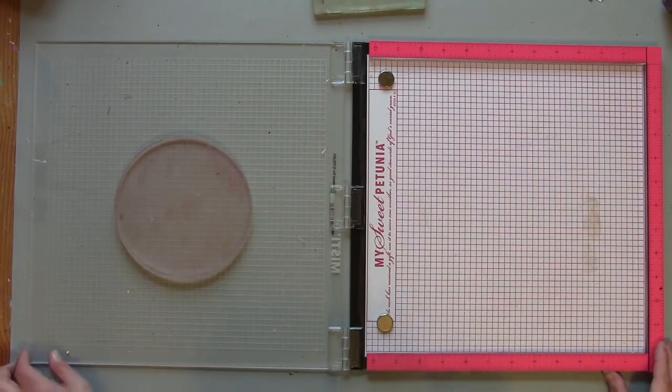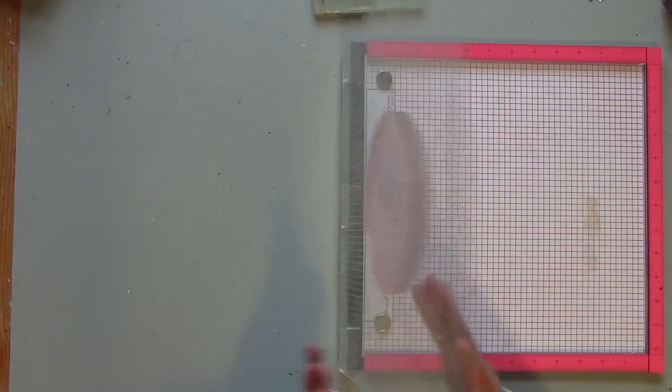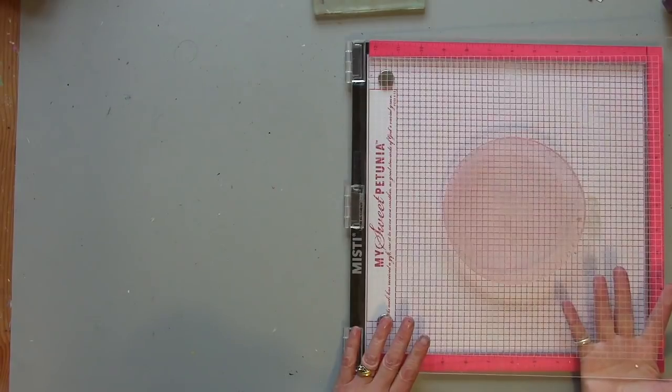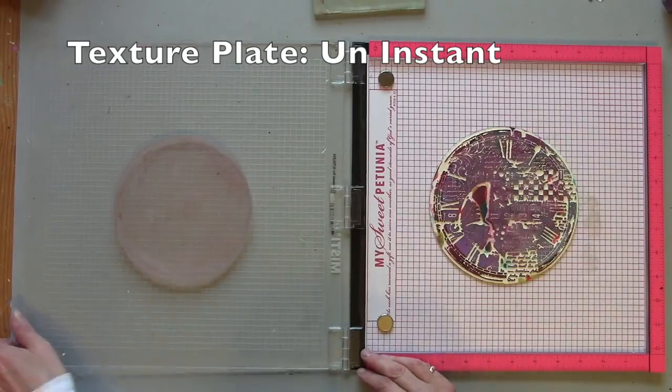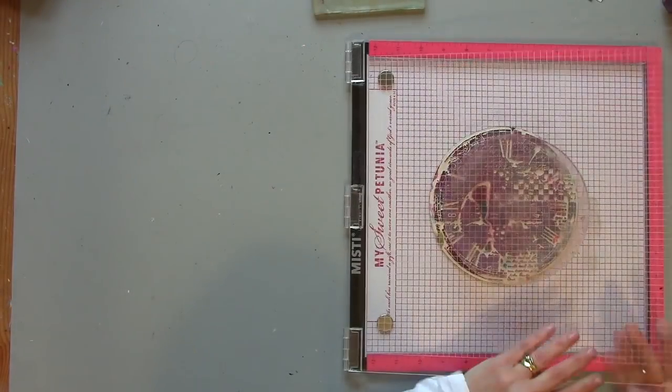And I'm using my Misti stamp platform from My Sweet Petunia. I'm going to put one of the texture plates on that side. I'm just going to line it up roughly.